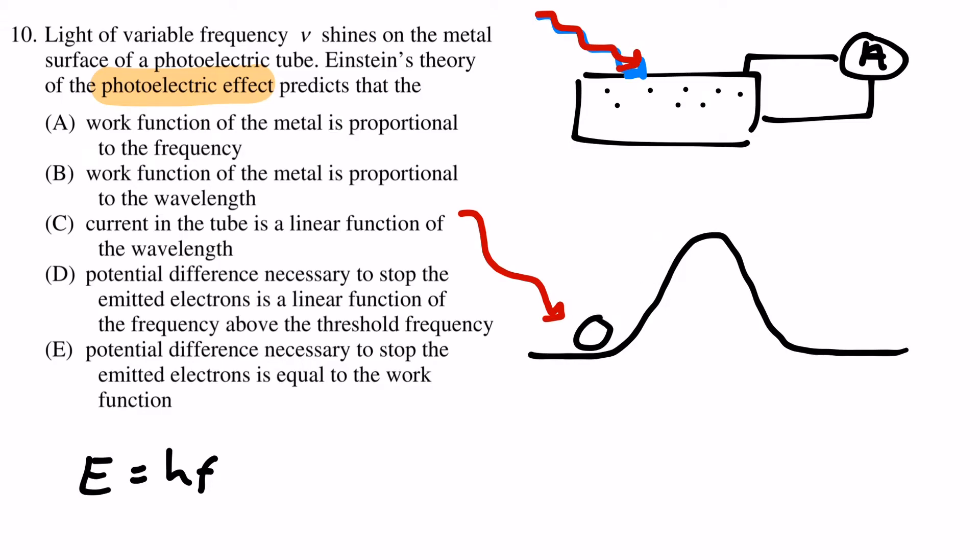However, if you used high frequency light, the electrons get enough energy to overcome the work function and whatever energy is left from the photon's energy after subtracting the work function becomes the electron's kinetic energy.